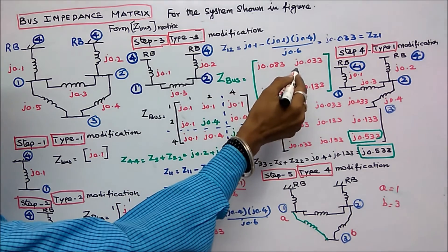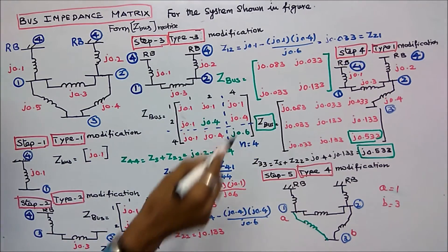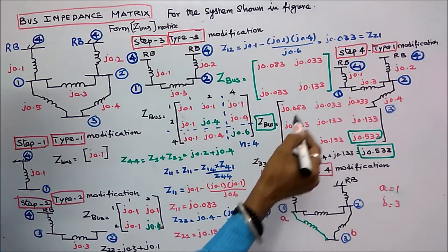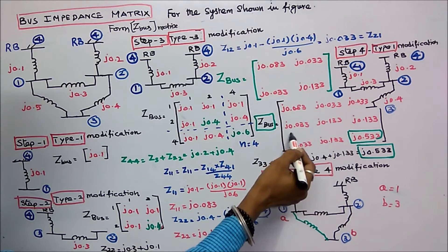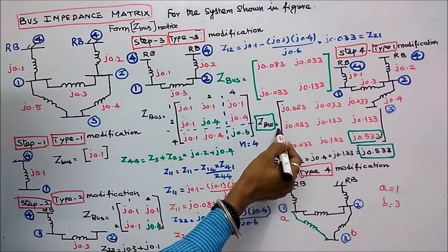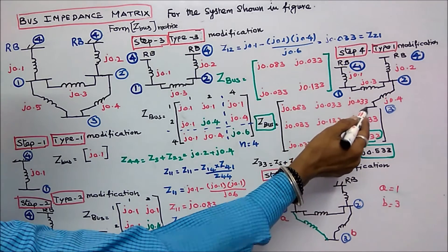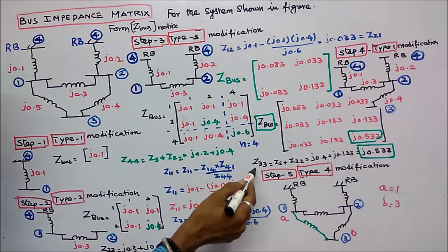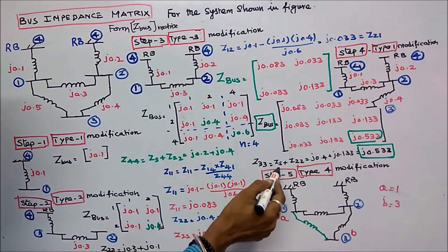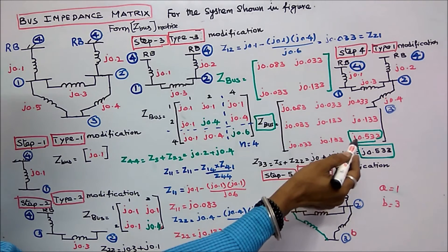Step four is a type one modification. I am connecting new bus three to the old bus two. Now I got a three by three matrix. The matrix values are: Z11=j0.083, Z12=j0.033, Z21=j0.033, Z22=j0.133. Z33 equals Zs plus Z22; Zs equals j0.4, Z22 equals j0.133, therefore Z33 equals j0.533.